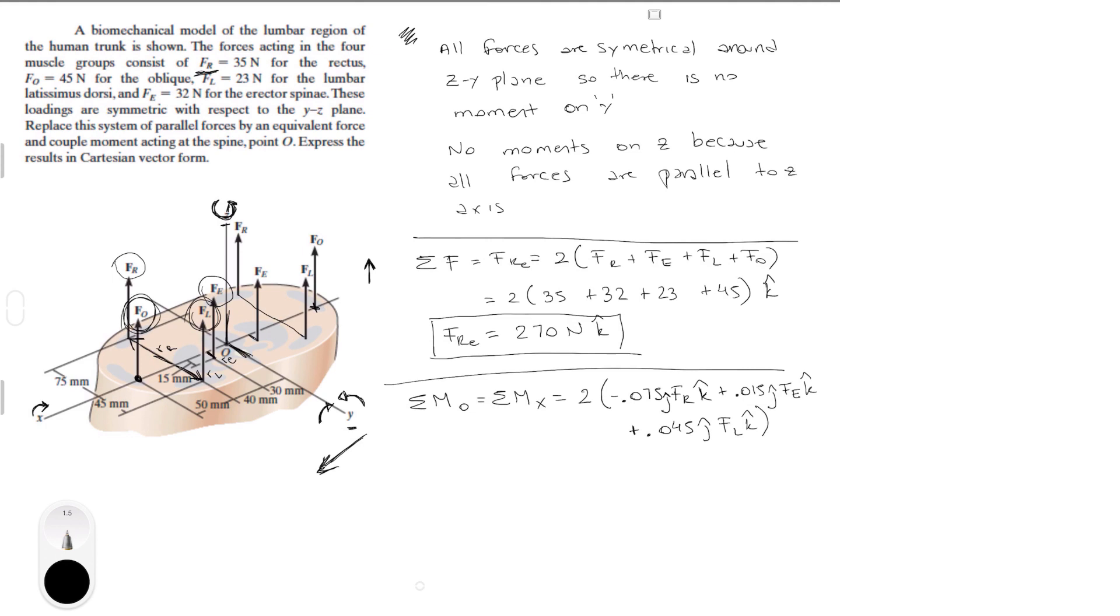Plus 0.045 in the j times F_L in the k. And that's it, and that is for this one. And this one is F_O times zero because it's sitting right on top of the x-axis.